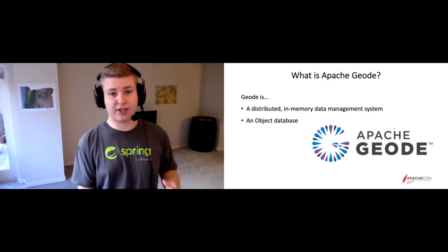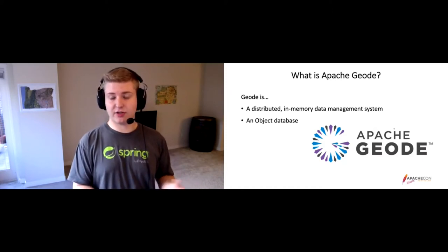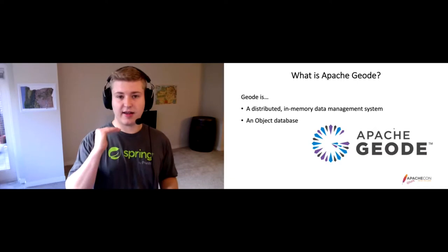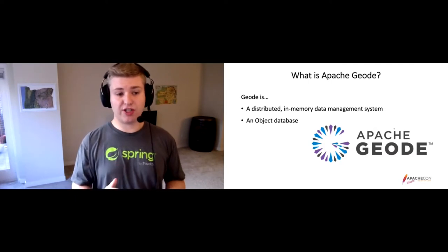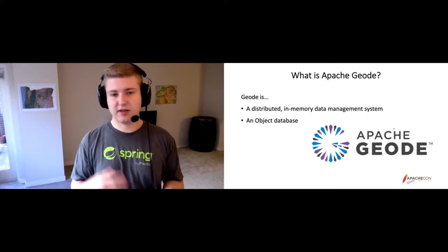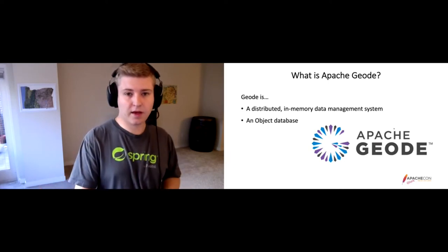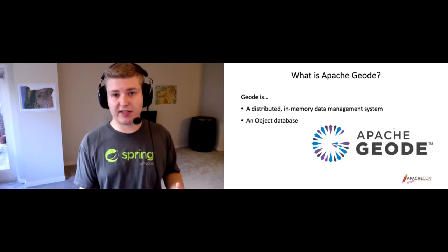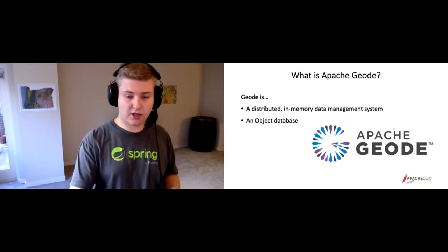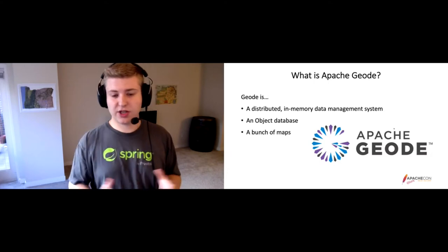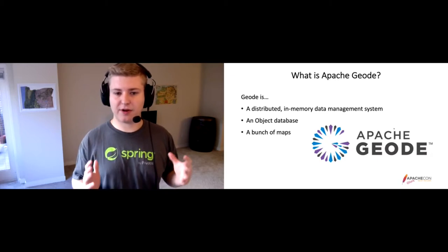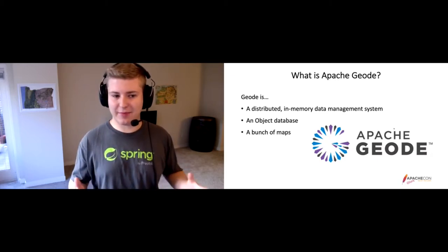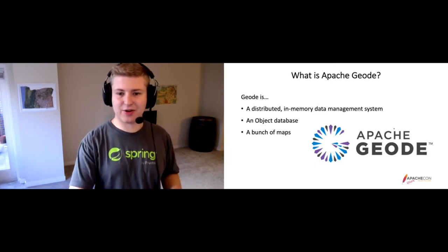Geode is also an object database. Unlike a traditional relational database that stores data as a row in a table, Geode stores your data in object form in what we call a region. A region is just a key-value store with some object type as your key and some object type as your value. You can have multiple regions the same way a traditional database can have multiple tables. So really, Geode is a bunch of distributed in-memory maps — that's the core of it.